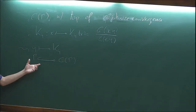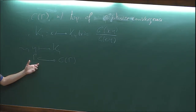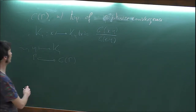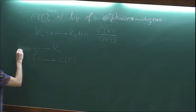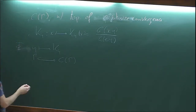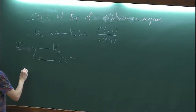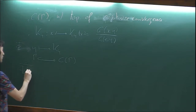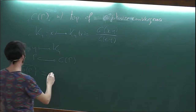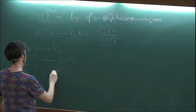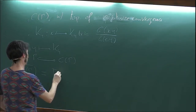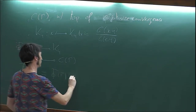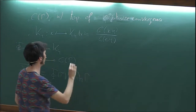The idea is to take the completion of this space, and actually it is compact. This gives us the Martin compactification. If you denote by phi the embedding, the closure of phi of gamma will be exactly phi of gamma union the Martin boundary of gamma.